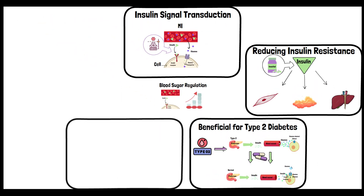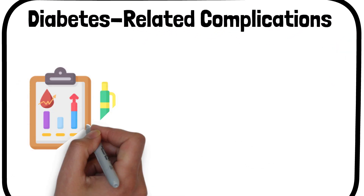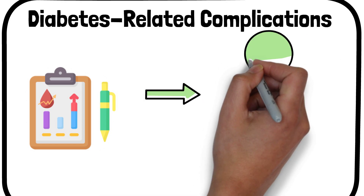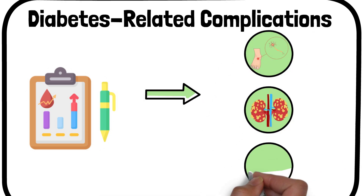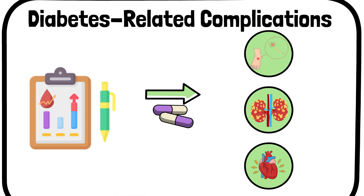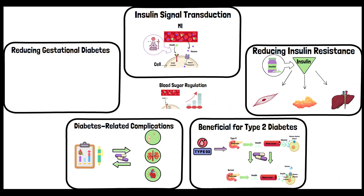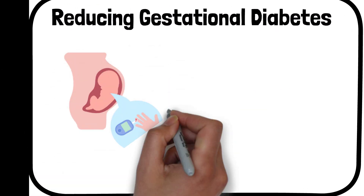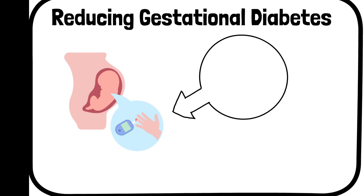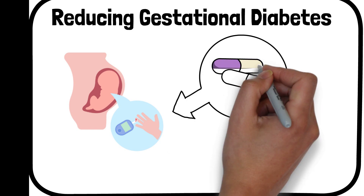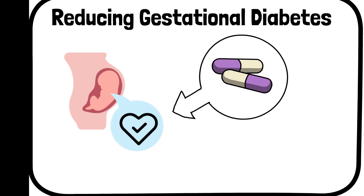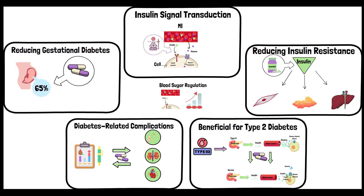Chronic high blood sugar levels can lead to various complications, including neuropathy, kidney damage, and cardiovascular diseases. Inositol's role in blood sugar regulation can contribute to the prevention or delay of these diabetes-related complications. Regarding gestational diabetes — a form of diabetes that occurs during pregnancy and is characterized by insulin resistance — inositol is suggested to be helpful in its management, with some studies showing a 65% reduction in gestational diabetes.